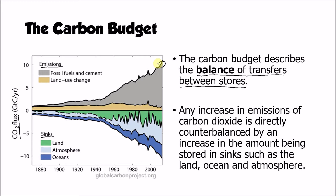Now, what you'll also notice is that this graph is a little bit of a mirror image. And actually, if we look at the total amount of carbon ending up in each of these three sinks, we can see that that also equates to about 10 gigatons of carbon per year.